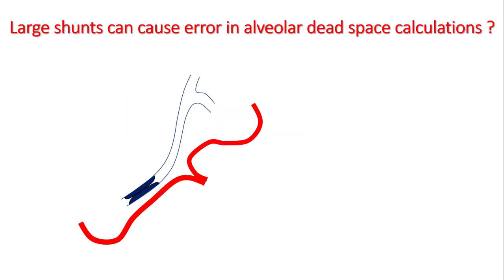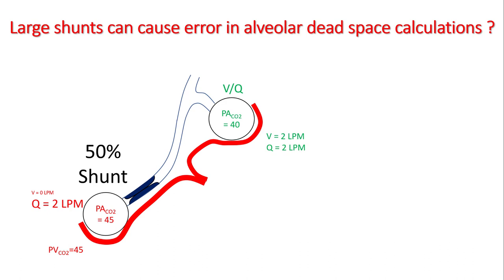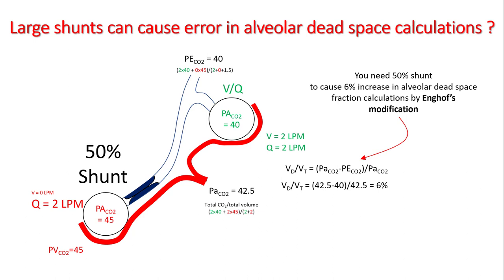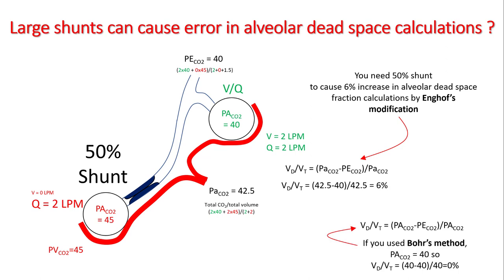How do shunts cause error in alveolar dead space calculations? In a two-alveoli model with a normal VQ area and a 50 percent complete shunt (blood flow of 2 L/min, half the total), the PaCO2 coming to the pulmonary vein is 42.5 and the PECO2 is 40. Disregarding anatomical dead space, VD/VT comes to 6 percent — but this is an error from the Enghoff modification, which assumes PaCO2 equals alveolar pCO2. Whenever you have large shunts, the Enghoff modification results in error. Using the Bohr method, which uses the true alveolar pCO2, VD/VT is in fact zero percent.